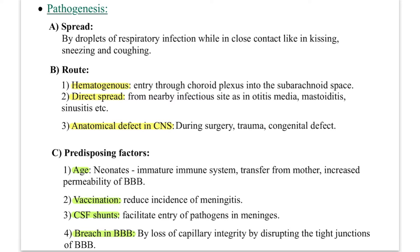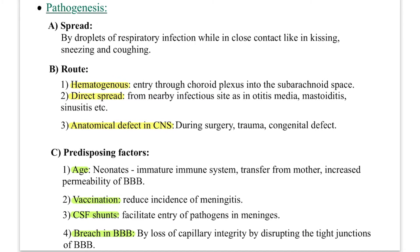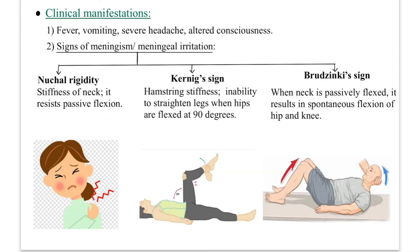Third is an anatomical defect in the central nervous system, such as accidental defects during surgery, trauma, or congenital defect. Predisposing factors include: age — in neonates, their immune system is very immature; transfer from the mother during pregnancy; and increased permeability of the blood-brain barrier. Second, lack of vaccination increases incidence. Third, CSF shunts facilitate pathogen entry. Fourth, breach in the blood-brain barrier, where tight junctions are disrupted, causing loss of capillary integrity.